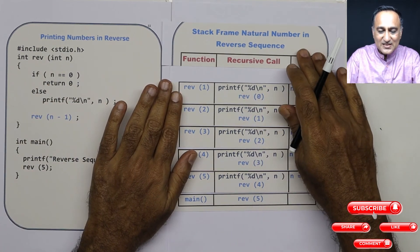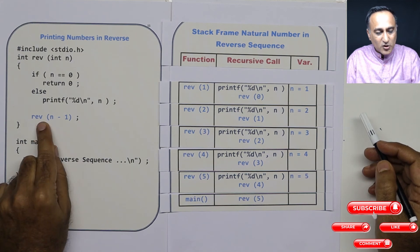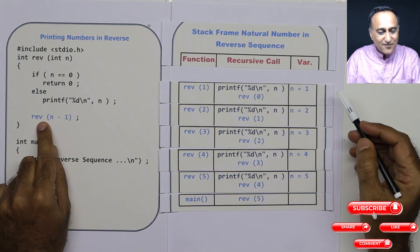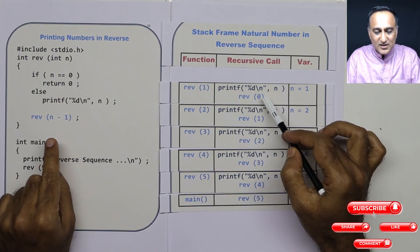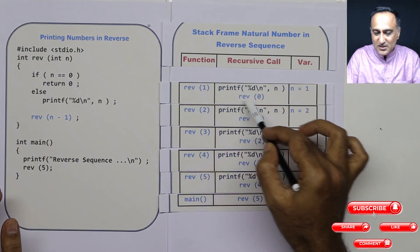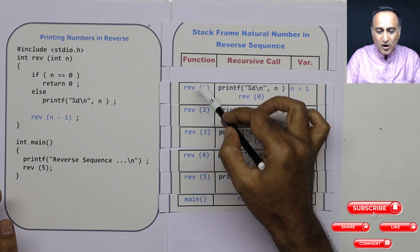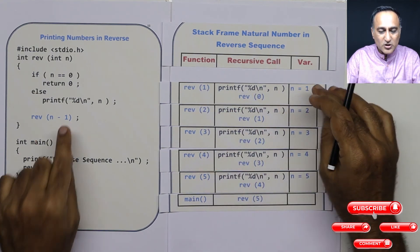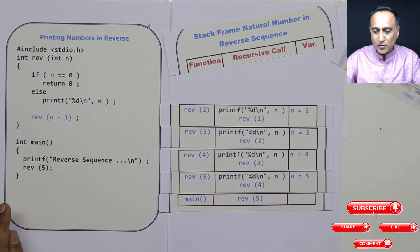Now, since 0 was returned, my execution has come back here. Since I have already calculated, this has been calculated, this function was executed, it is popped out of the stack. That means this processing is also over and reverse of 1 execution is complete. So I pop this out of the stack.